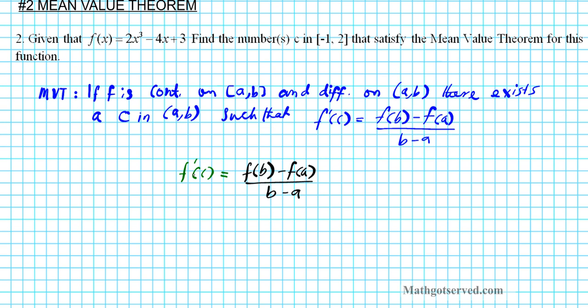Let's find f prime of C. So, how do we do that? Let's recall what the function is. f of X is 2X to the third minus 4X plus 3. f prime of C simply means evaluate the derivative of this function at x equals C. Find the derivative, plug in C for X, and you are done.